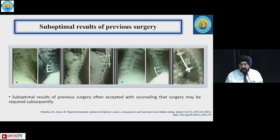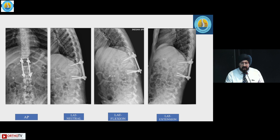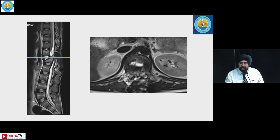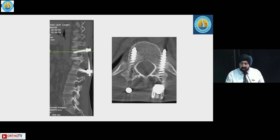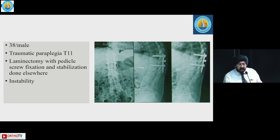Post-spinal trauma surgery results may be sub-optimal but are often accepted with counselling that further surgery may be required. In the case of a 20-year-old male with an L1 complete fracture, inadequate fixation quality, residual compression, and malpositioned screws were identified. Revision surgery was performed with satisfactory outcomes.